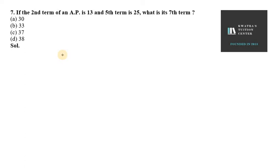Question number 7 says, if the second term of an AP is 13 and fifth term is 25, what is its 7th term? A second is given as 13, A5 is given as 25. Now we need to find the value of A7.